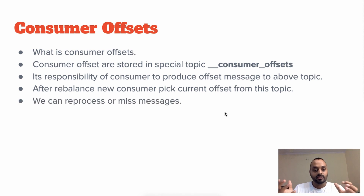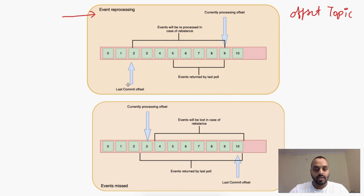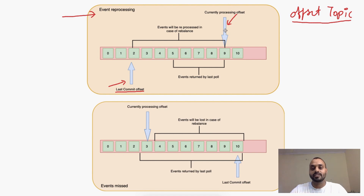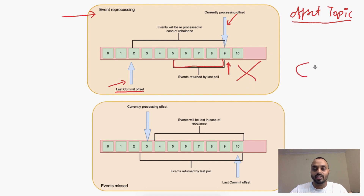While doing these things, we can have scenarios where we reprocess or miss some messages. Let's discuss how we can reprocess events. In this scenario we have two offsets: the last committed offset stored in the offset topic, and the currently processing offset known by the application. In this poll we got messages from 5 to 9, and we are processing the 9th message. After this we will commit the last committed offset to 9, but we have not done that and our application crashes.